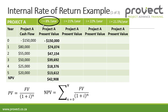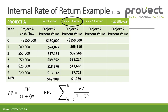Our net present value for project A with a discounted rate of 8% is $42,908. Now we need to establish, as part of the internal rate of return, where the net present value is 0, and we're going to do that through an iterative process.